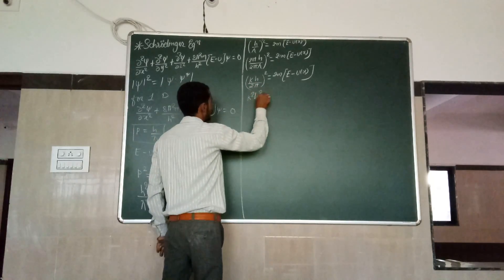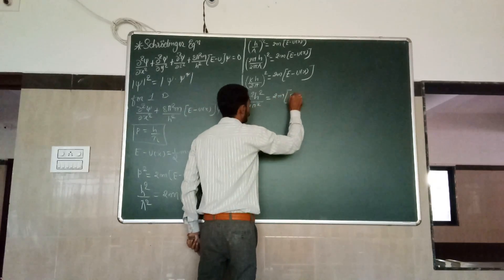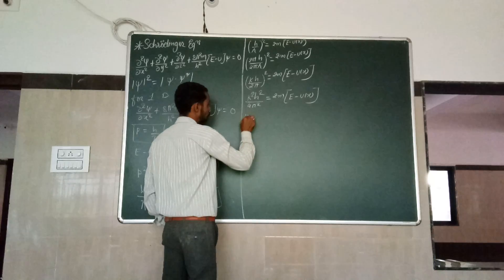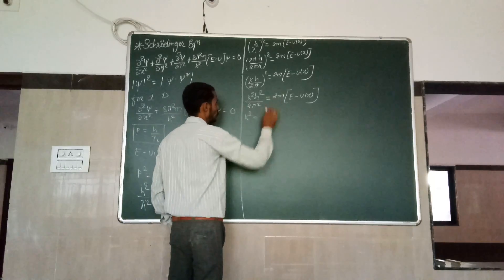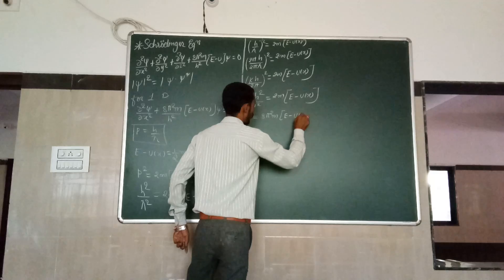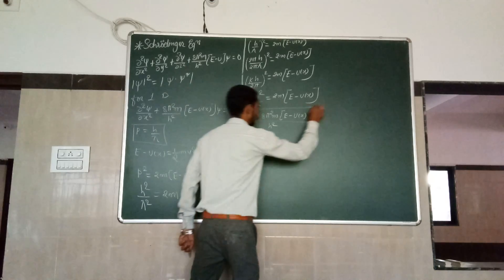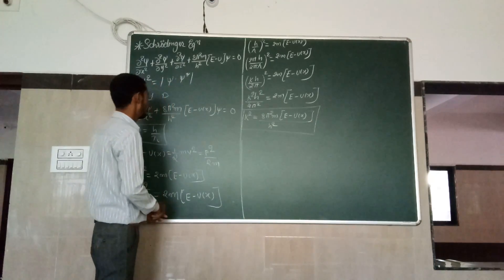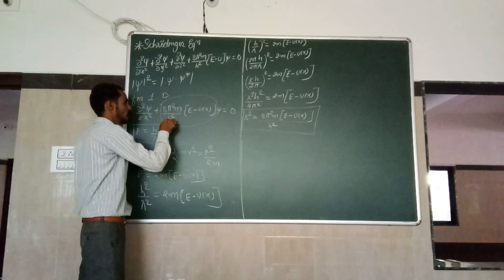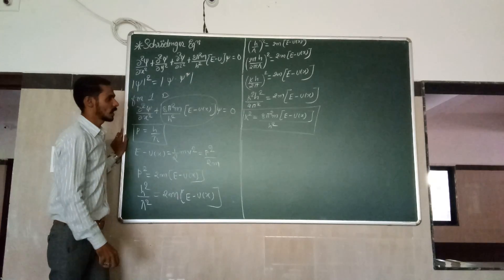Expanding the square gives k squared times h squared over 4 pi squared equals 2m times (E minus U(x)). Isolating k squared by moving 4 pi squared upstairs, we get k squared equals 8 pi squared m times (E minus U(x)) divided by h squared. So the term 8 pi squared m over h squared times (E minus U(x)) is nothing but k squared.